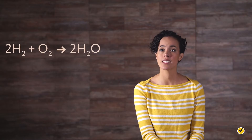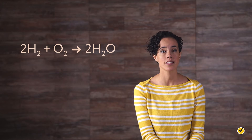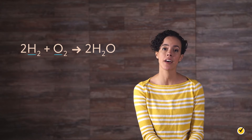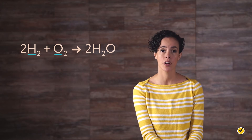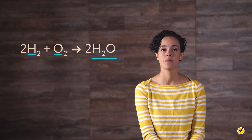Throughout this video, we're going to use the reaction of hydrogen and oxygen to produce water as an example. So let's begin with the notation used to represent this. This is the balanced chemical equation for the reaction. The reactants, hydrogen and oxygen, are on the left side of the arrow, and the product, water, is on the right side.